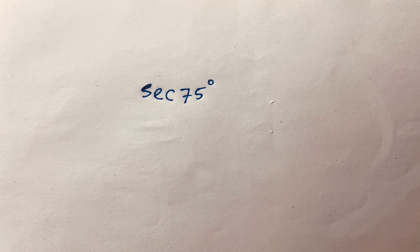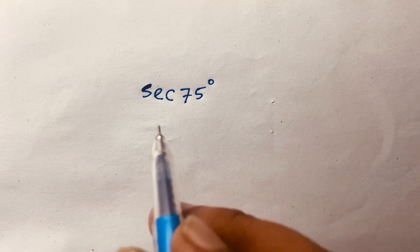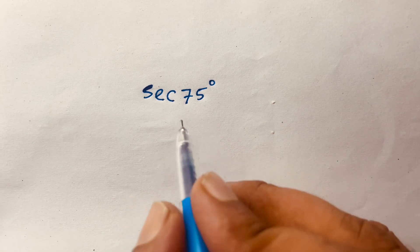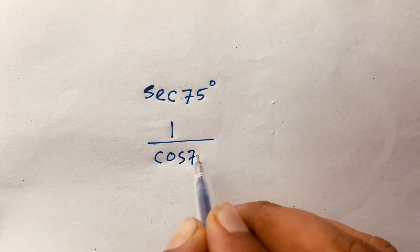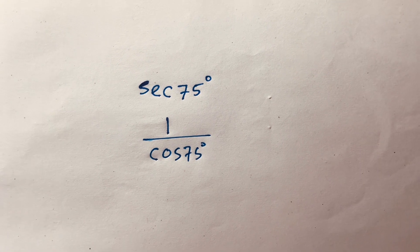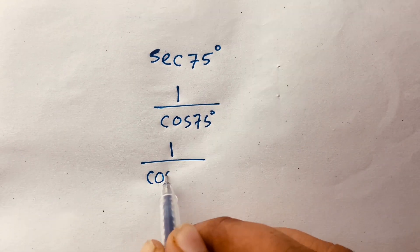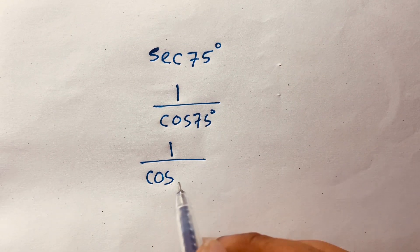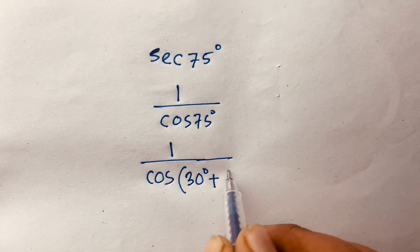In this video we solve: sec(75°) is equal to what. First, sec(75°) = 1 over cos(75°). We can write 75° as 30° + 45°, so this becomes 1 over cos(30° + 45°).